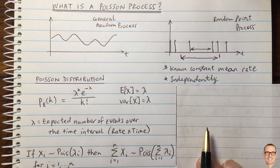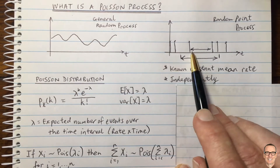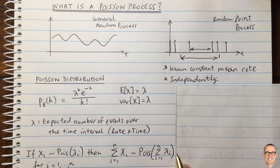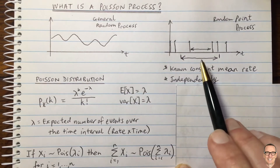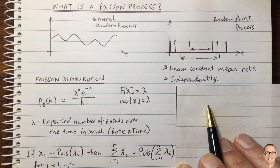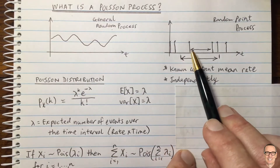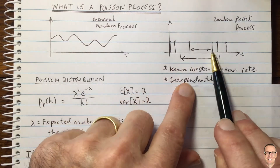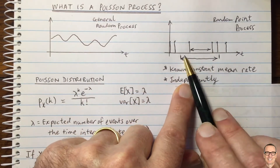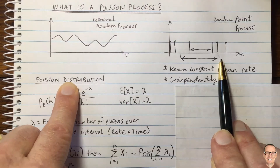One other thing to note: events can't happen at exactly the same time — that's another assumption of the Poisson process. So we've talked about the number of events that happen over a given time interval, which is described by the Poisson distribution.